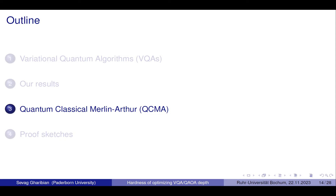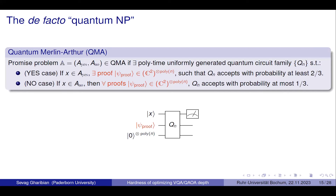Let me define what we mean by QCMA for the audience. First, QMA — Quantum Merlin-Arthur — is the de facto definition of quantum NP. This is what happens if you take NP and replace the classical proof with a quantum proof and the classical verifier with a quantum verifier. In the yes case, there is a good proof psi on poly(n) qubits so that the verifier accepts with high probability. In the no case, all proofs are accepted with low probability. This is QMA — not what we're studying.